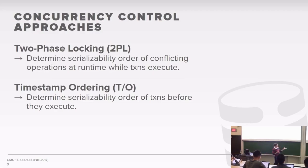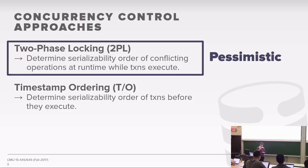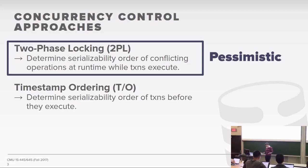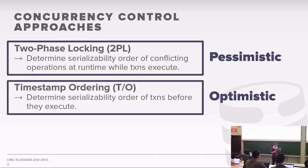Last week we talked about two-phase locking, a pessimistic protocol where transactions must acquire locks on objects before the database system lets them read or write. The two phases are the growing phase where you acquire locks, and the shrinking phase once you release one lock. Today we're talking about timestamp ordering — an optimistic protocol that uses no locks at all, assuming transactions won't conflict.